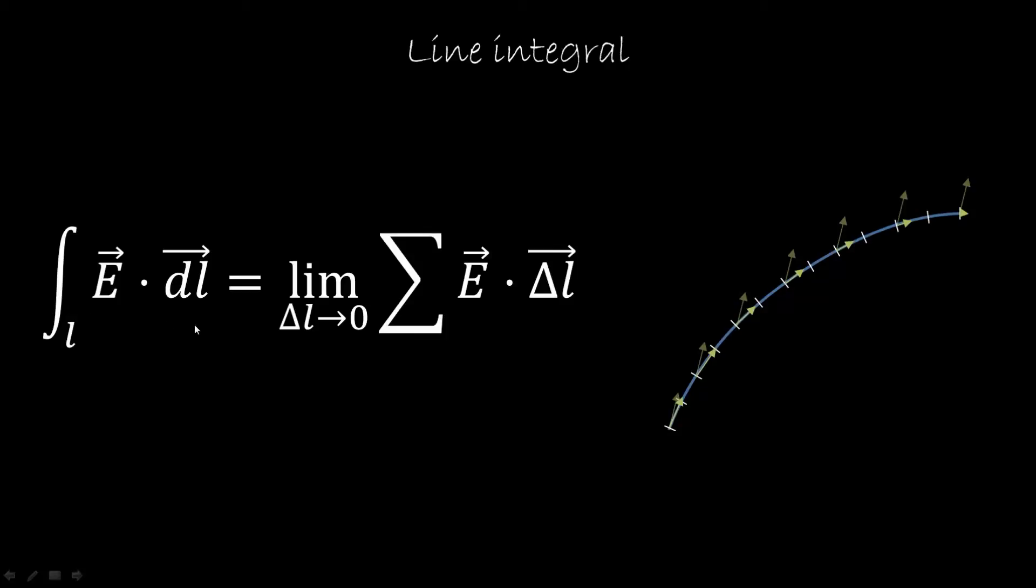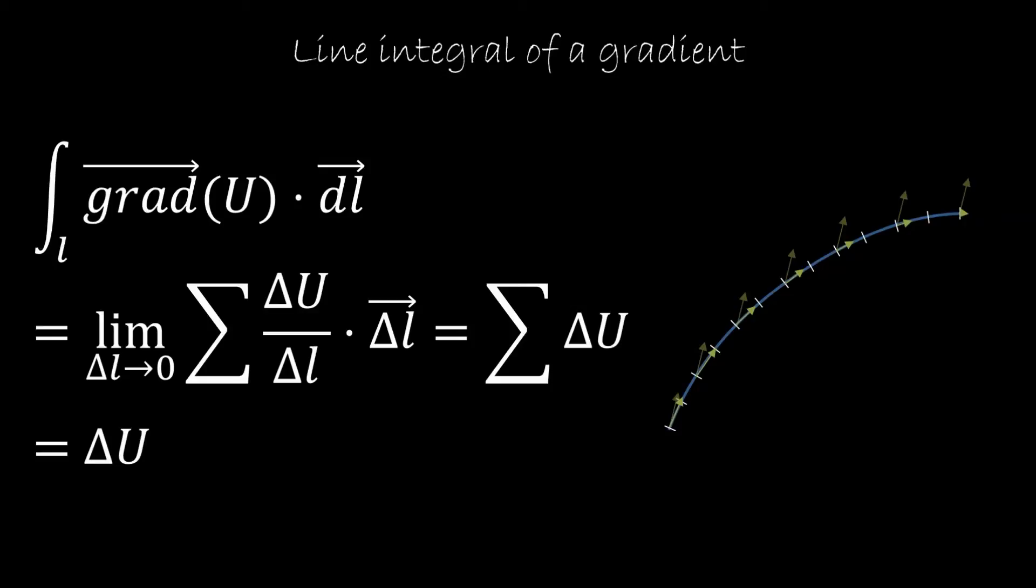And you can always divide the line integral by the length, and then you really have the average component of that field along that path. So we have seen a vector field before, which was the gradient, so we can ask ourselves, what is the line integral of a vector field that is actually a gradient of a scalar field?